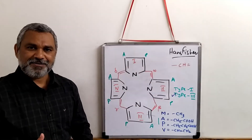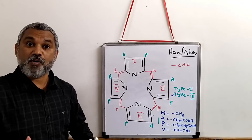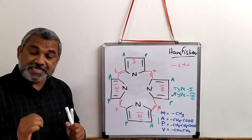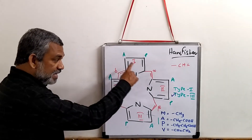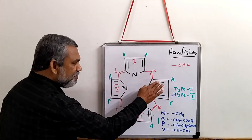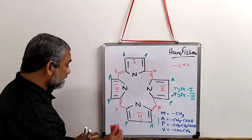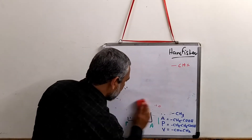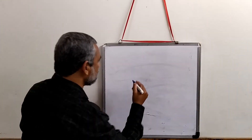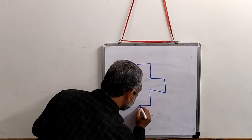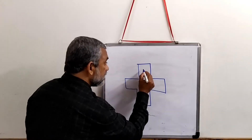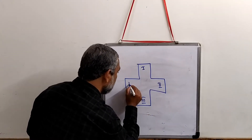Fischer suggested a very simplified way of representing the structure of the tetrapyrrole. What he suggests is to remove all the methenyl bridges. When you remove them, you are left with the four rings. Connect all four rings in the following manner, giving a simplified structure. The four rings are numbered: ring one, ring two, ring three, and ring four.